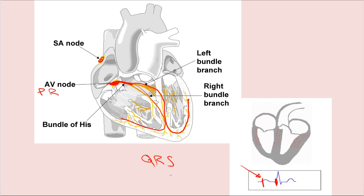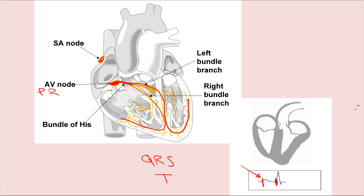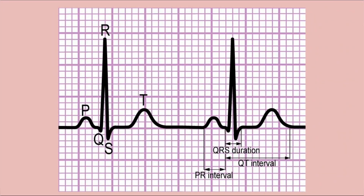After ventricular contraction, there is relaxation represented by the T wave. So to summarize the ECG: P wave is atrial contraction, PR interval goes from the start of the P to the R — it should be three to five small squares, which equals 120 to 200 milliseconds. QRS represents ventricular contraction, and T wave represents relaxation.